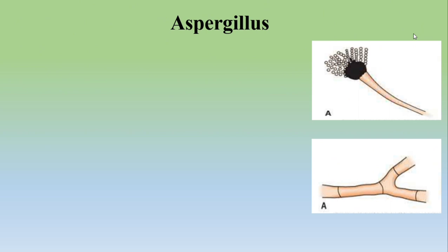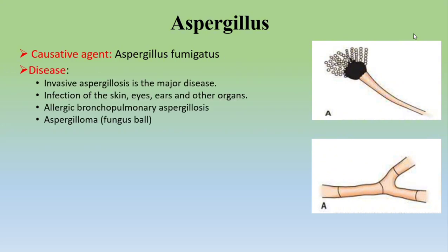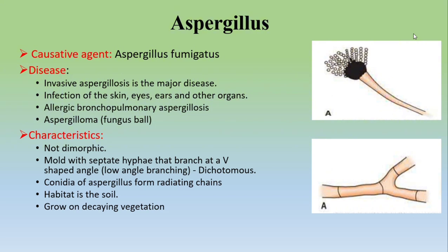The third opportunistic mycosis is Aspergillus. The main causative agent is Aspergillus fumigatus. Diseases caused include invasive aspergillosis (the major disease), infection of the skin, eyes, and ears, allergic bronchopulmonary aspergillosis (ABPA), and aspergilloma (fungus ball). Characteristics: Aspergillus is not dimorphic — it exists only in mold form. It has septate hyphae that branch at a V-shaped (narrow/acute) angle — dichotomous branching — as visible in the picture. This is in contrast to Mucor and Rhizopus, which branch at 90 degrees.